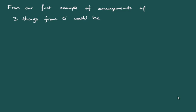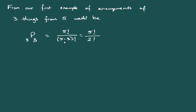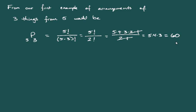Going back to the first example, arranging three letters from five letters is 5P3 — five factorial divided by (5 minus 3) factorial, which is five factorial divided by two factorial. Five times four times three times two times one divided by two times one: the two times ones cancel, leaving five times four times three, or 60 possible arrangements.